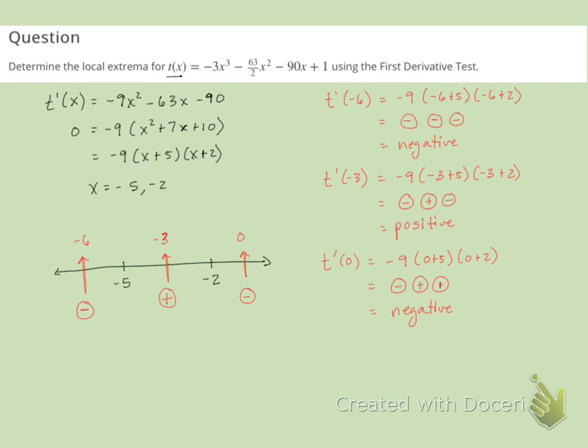So now looking at our sign chart. So on the values below five, the function is decreasing. And then after five, the functions are increasing. Therefore, negative five is a local min.